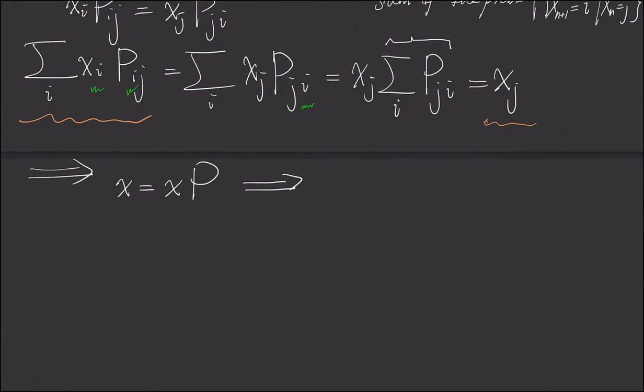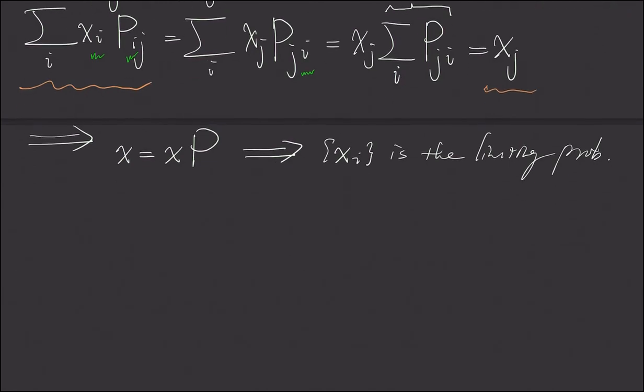And as a result, our x_i is stationary as well as limiting. And in the next video, we are going to revisit our famous random walk example.